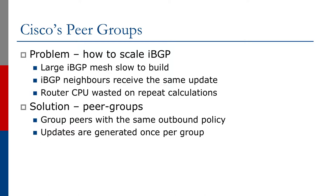One more scaling technique which Cisco has introduced for IOS is a concept called the peer group. This was originally introduced in the mid-90s as an aid to scaling IBGP. Earlier we talked about how route reflectors were used to scale IBGP linearly, rather than the full mesh IBGP which scaled more or less by n squared. Another aid is the peer group, because what this helps with is building the IBGP neighbor mesh.